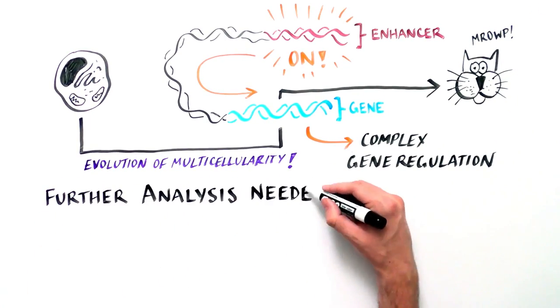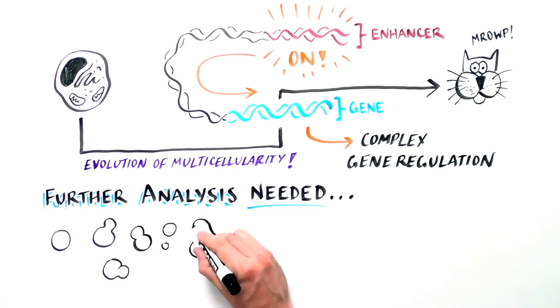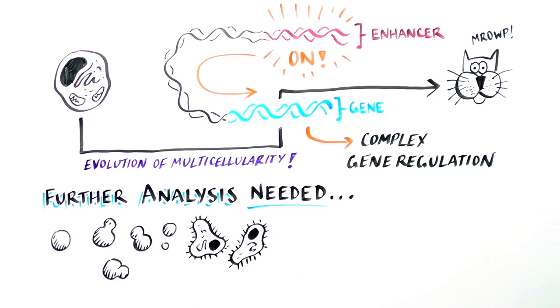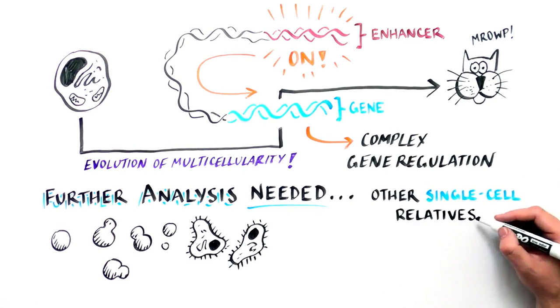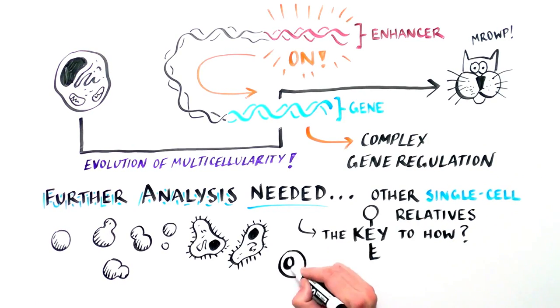Further analyses of other unicellular relatives of animals will be critical to comprehensively describe the evolution of the animal-specific regulatory genome, which will allow us to continue to unravel the mystery of how we as animals evolved from our unicellular ancestors.